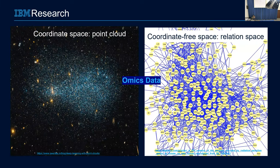I wanted to set the stage here. I see data in two colors. Either your data exists on a coordinate space — a point cloud in some high-dimensional space — or the data is all about relations. I'm showing you a graph, but you can imagine a hypergraph, where there's a relation between points. It is the second type — residing in a relation space of your data — that I'm going to be mostly talking about, trying to answer questions in that space.